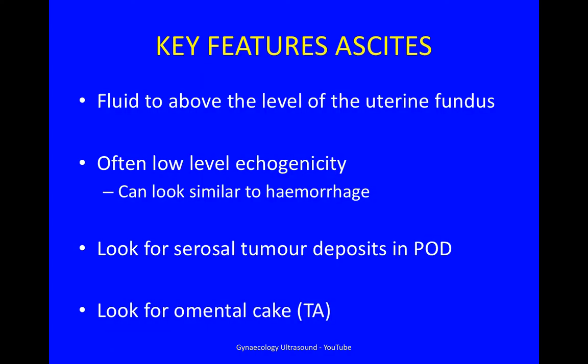The key features of ascites are that this is fluid which extends beyond the level of the uterine fundus. It often has low-level echogenicity and can look similar to haemorrhage. Look for serosal tumour deposits in the pouch of Douglas, and look for omental cake transabdominally.